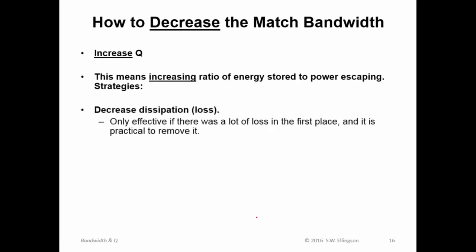How would you decrease the match bandwidth? Well, you could increase Q. Again, bandwidth and Q are inversely related, so you could increase Q. That means increasing the ratio of energy stored to power escaping. How are you going to do that? Well, you could decrease dissipation, but that's only effective if there's a lot of loss in the first place. So if you have no loss to remove, this is a non-starter.